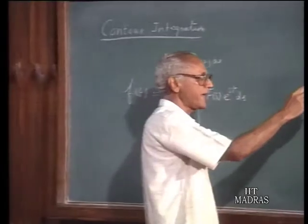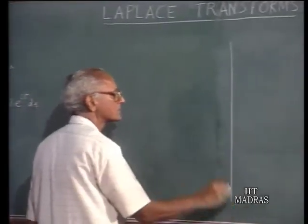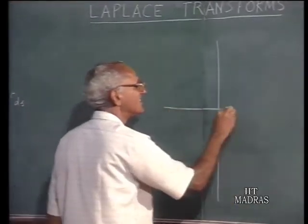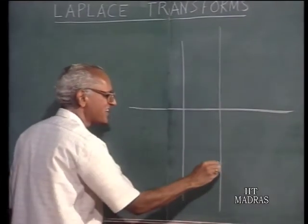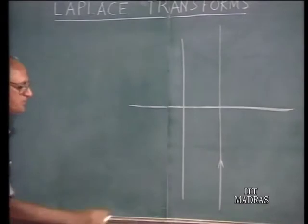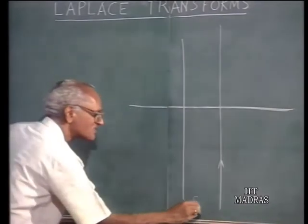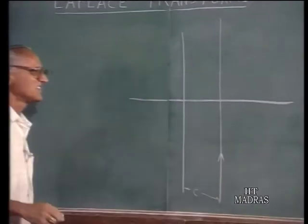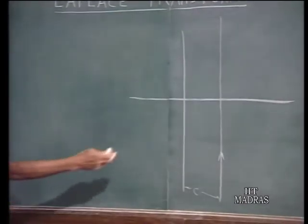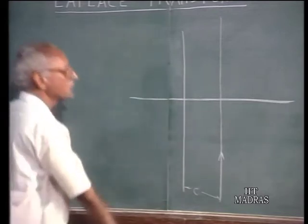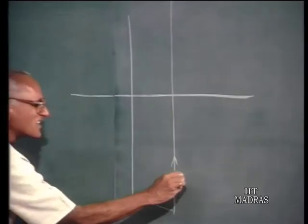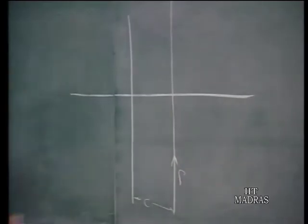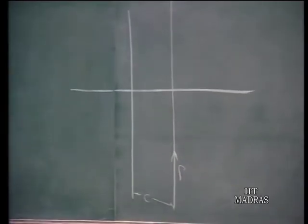In the complex plane, you take the integration along a contour from c minus j∞ all the way to c plus j∞. Let me call this contour gamma. This integration is along this contour.